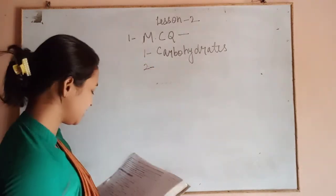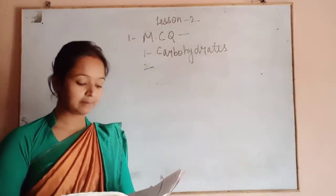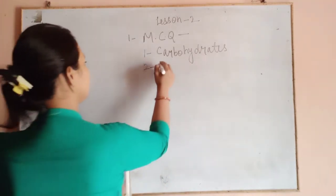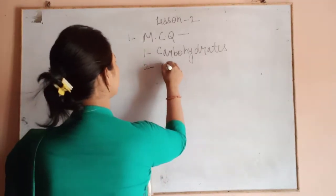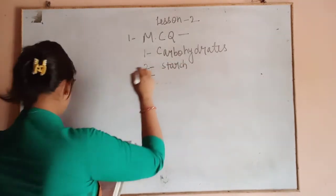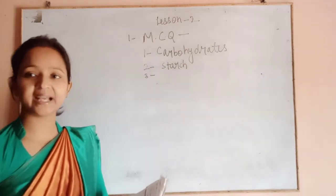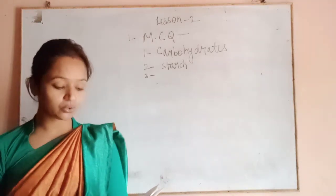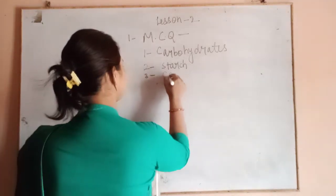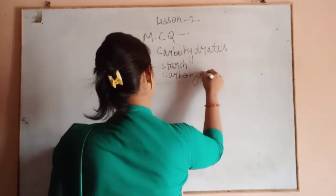The second multiple choice question: iodine is used to test the presence of starch in food. The third multiple choice question: jaggery is a good source of carbohydrates.